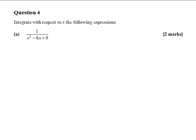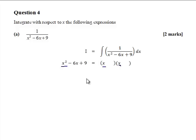Question four: integrate 1 over x squared minus 6x plus 9. Let's see if we can factor x squared minus 6x plus 9. We start with some brackets, put the x's in because this term times this term have to give us this term, and here and here need to be the factors of 9. Let's try putting 3 in.